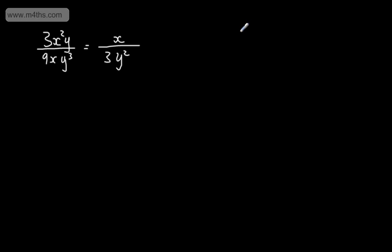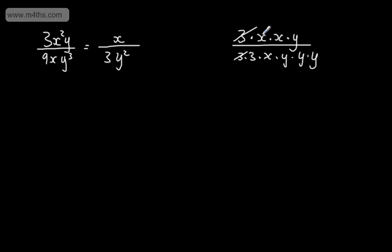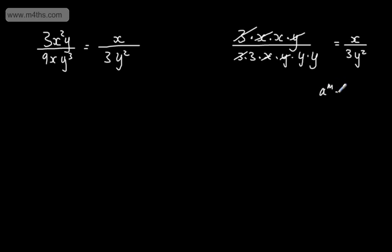Although this is a slightly less cultured approach, you could expand everything out — 3 times x times x times y over 3 times 3 times x times y times y times y — and cancel them off: the 3 with the 3, the x with the x, the y with the y. That would leave x over 3y squared. The problem with this approach is that with higher powers it becomes a nightmare. All I've done is used the rules of indices: a to the power of m divided by a to the power of n equals a to the power of m minus n.